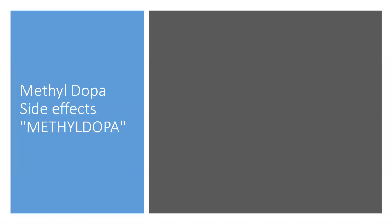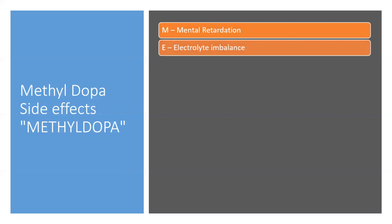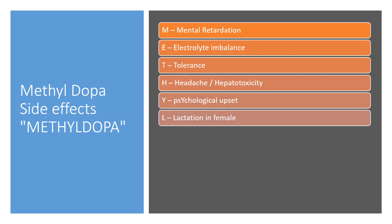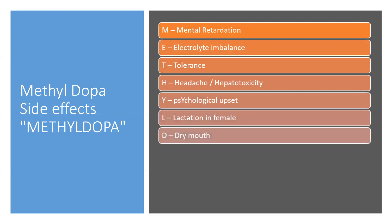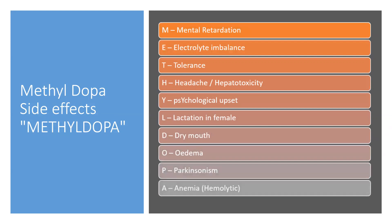Methyldopa side effects are spelled out by the drug name itself — METHYLDOPA: M for mental depression, E for electrolyte imbalance, T for tolerance, H for headache and hepatotoxicity, Y for psychological upset, L for lactation in females, D for dry mouth, O for edema, P for Parkinsonism, and A for anemia (hemolytic).